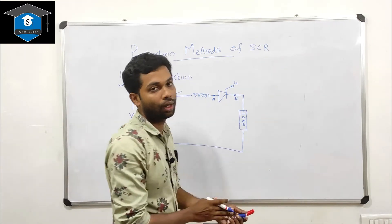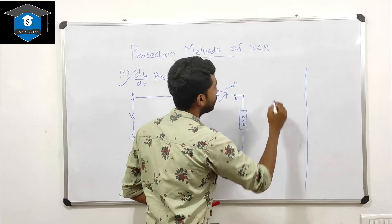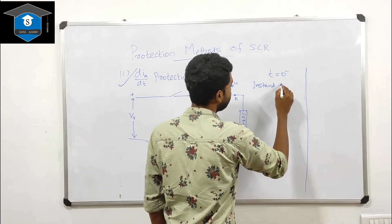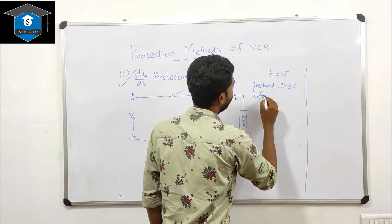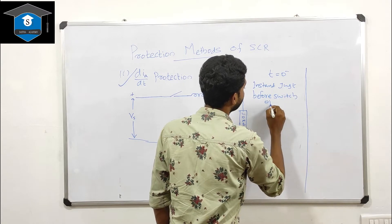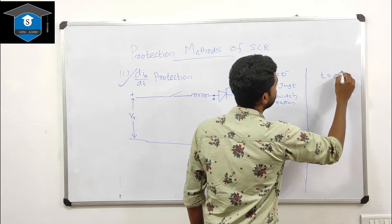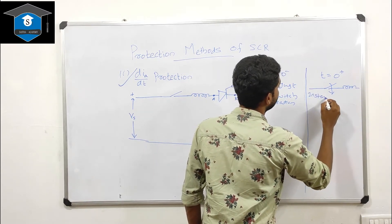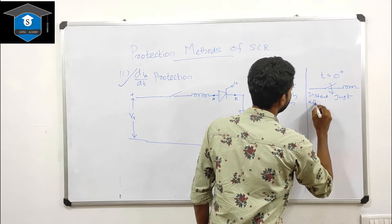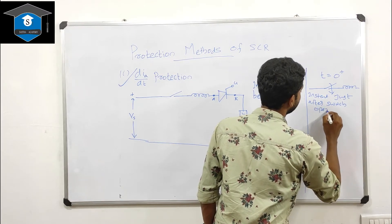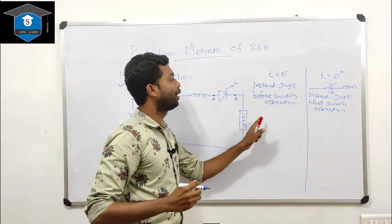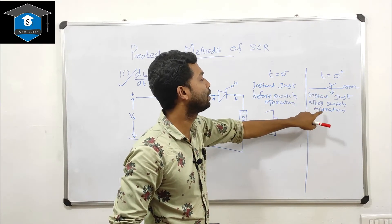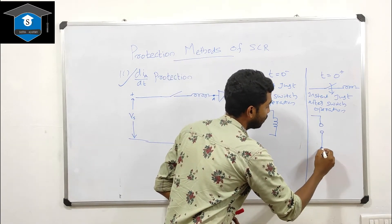Under transient conditions, t equals zero minus is the instant just before the switch operation, and t equals zero plus is the instant just after the switch operation. At t equals zero plus, the inductor acts as an open circuit.